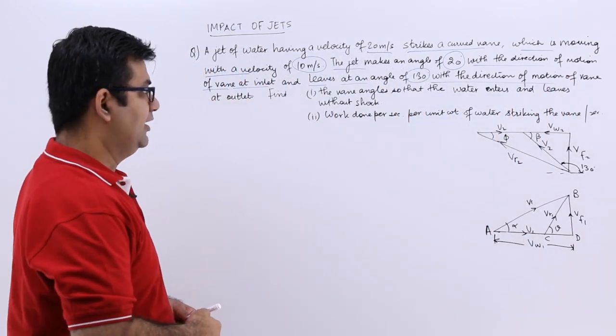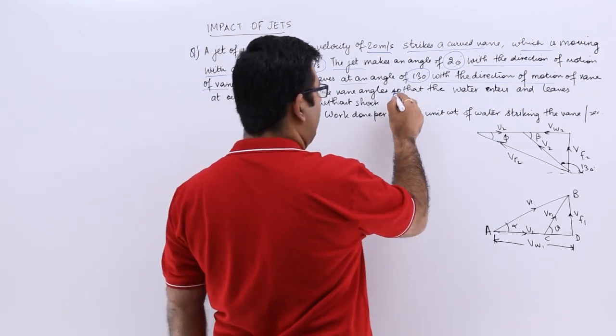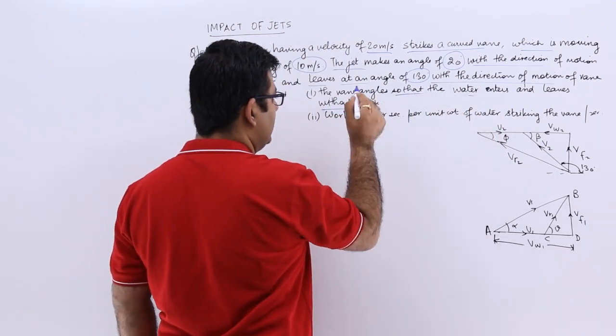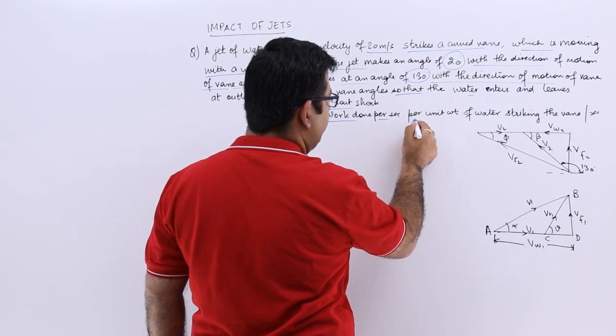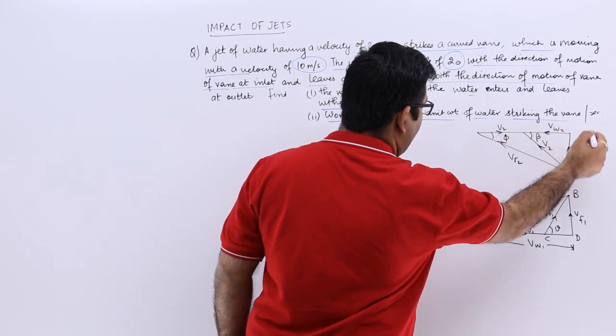At the outlet, find the vane angles so that the water enters and leaves without shock and the work done per second per unit weight of water striking the vane per second.